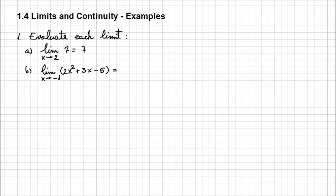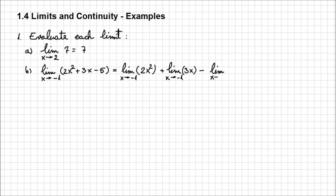I'm going to decompose this limit into smaller limits that are easier to approach — down to the smallest elements we know how to determine the limit for. So this equals the limit when x approaches minus 1 from 2x squared, plus the limit when x approaches minus 1 from 3x, minus the limit when x approaches minus 1 from 5.